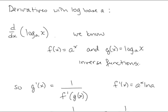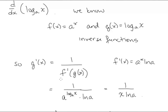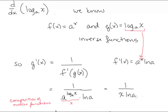Let's find the derivative of log base a of x using the relationship between derivatives of inverse functions. f of x equals a to the x and g of x equals log base a of x are inverse functions. g prime of x equals 1 over f prime of g of x. Since f prime of x equals a to the x ln a, we get 1 over a to the log base a of x times ln a. By composition of inverse functions, a to the log base a of x equals x, so the derivative is 1 over x ln a.